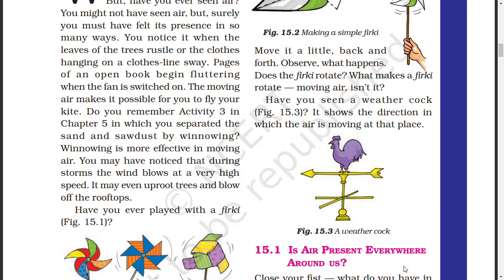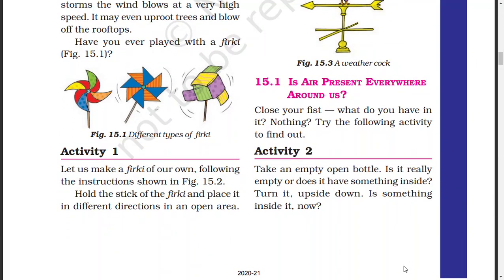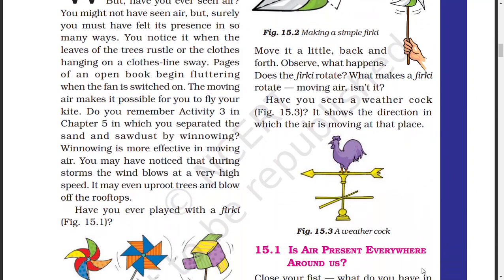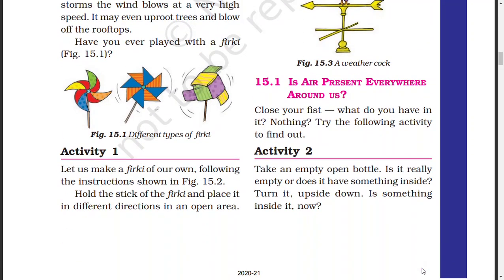Next, we will try to find the activity. We will rotate in the open area. So if we look at the light here, we can rotate. Then we will look at the weather clock. Why does the air move in this direction or the other direction? We will check the air all around us and how much air is present. That is how we will try to find Activity Two.